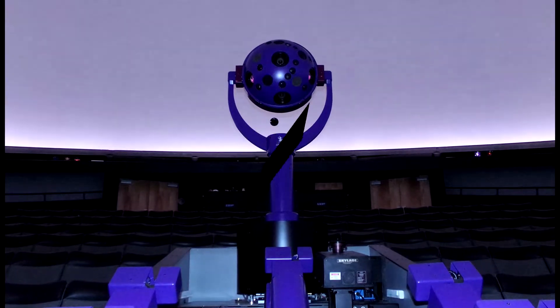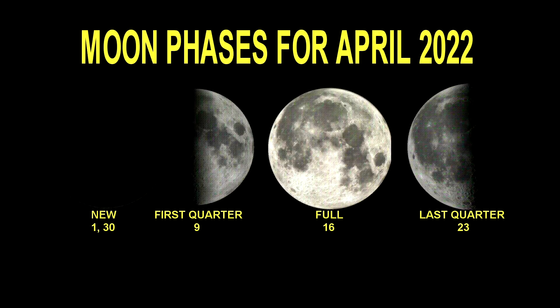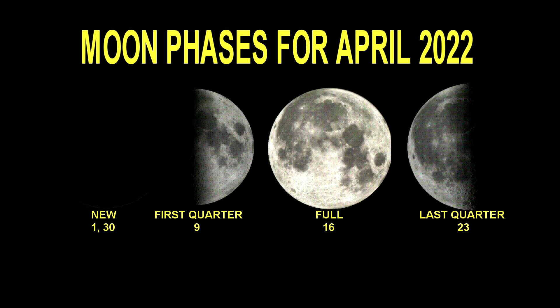As always, we'll take a look at the moon phases first and find the moon will be new on the 1st and the 30th this month, making for two new moons this month. First quarter moon will occur on the 9th, full moon on the 16th, and last quarter on the 23rd.